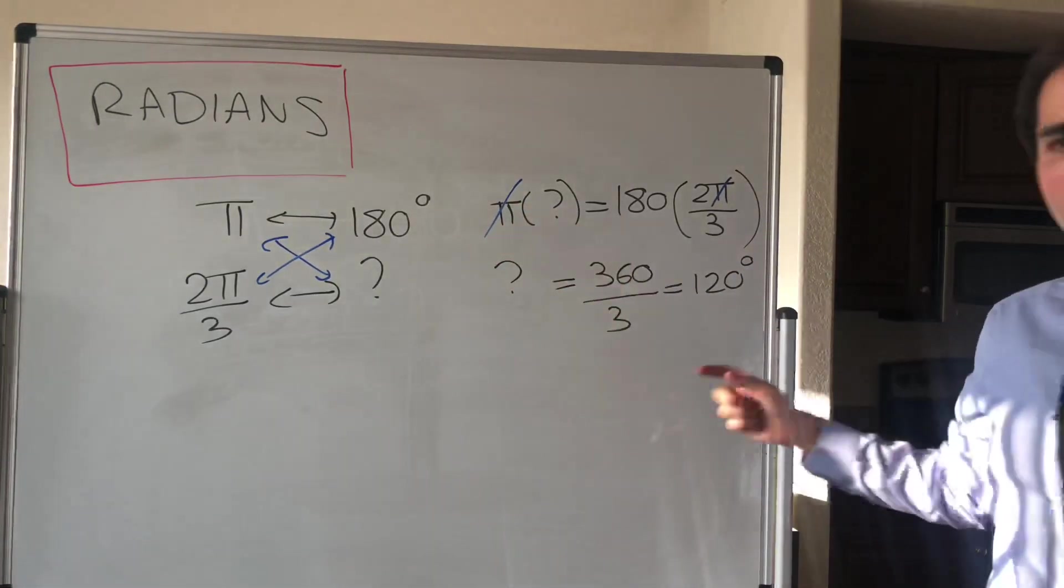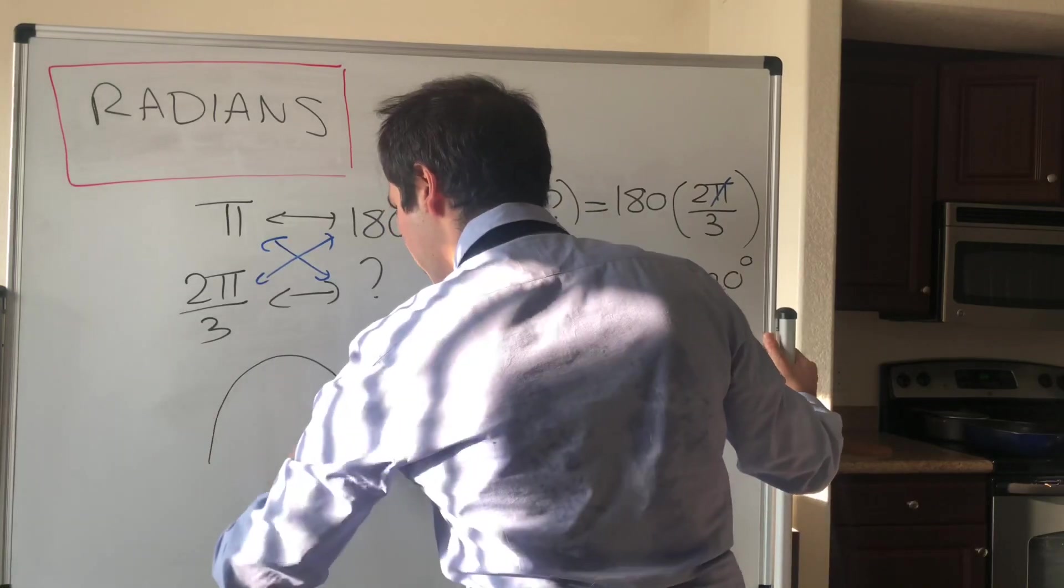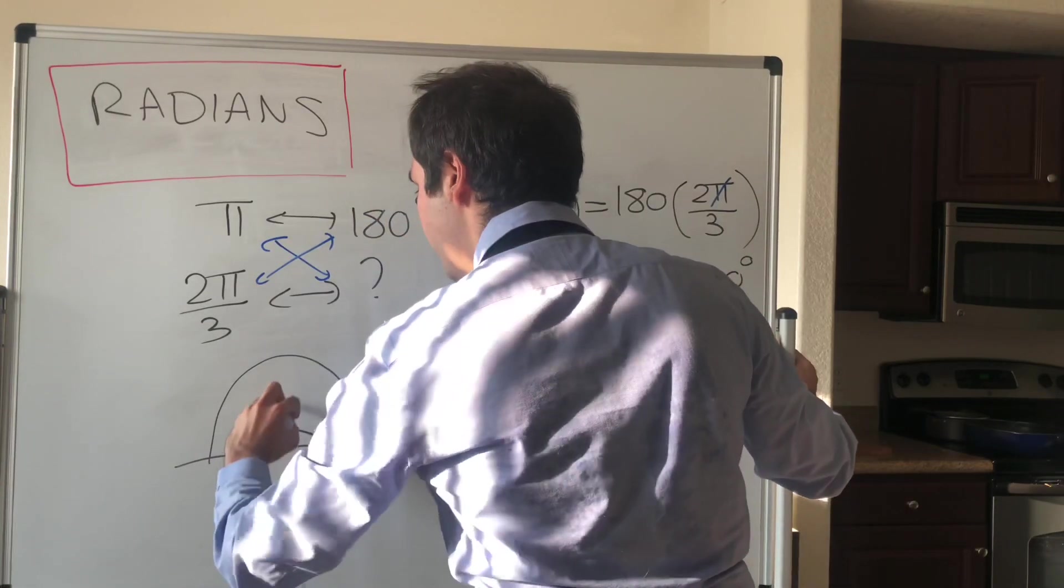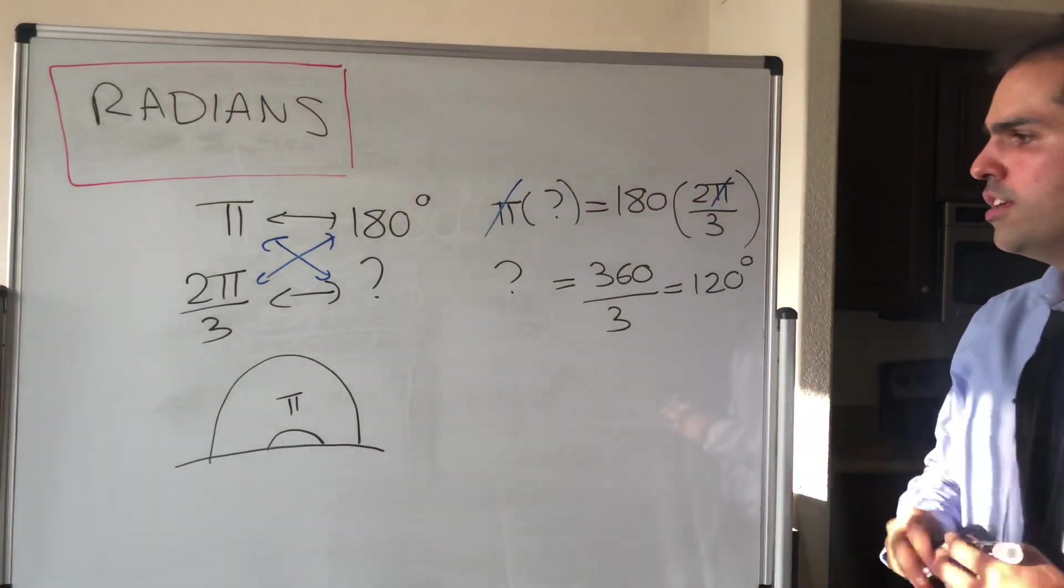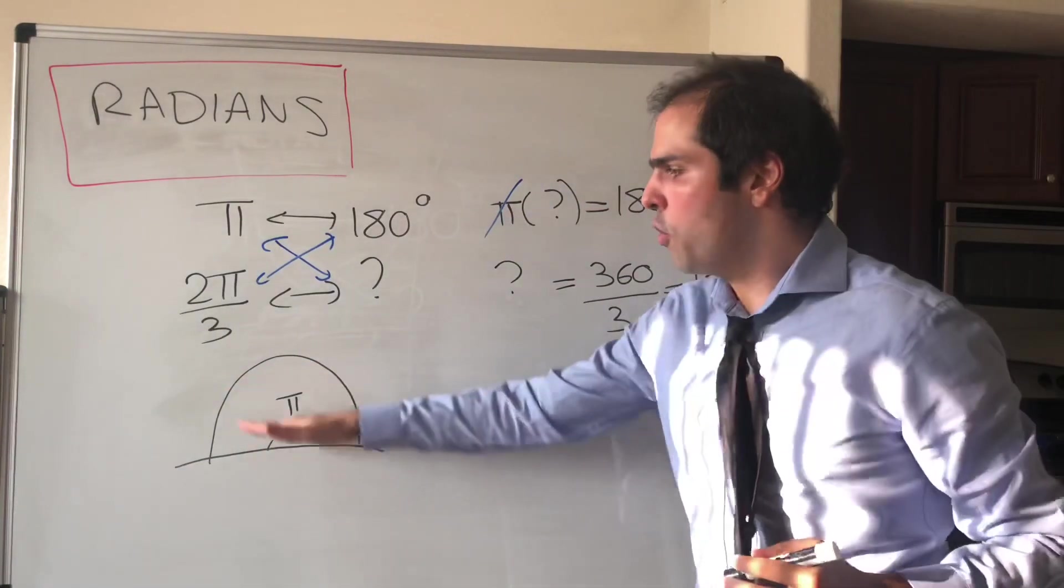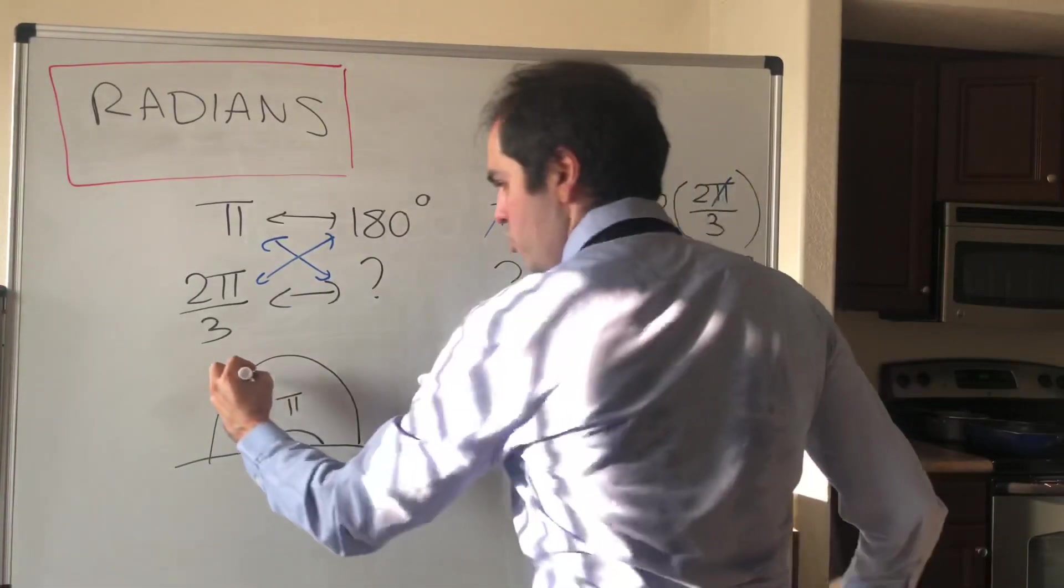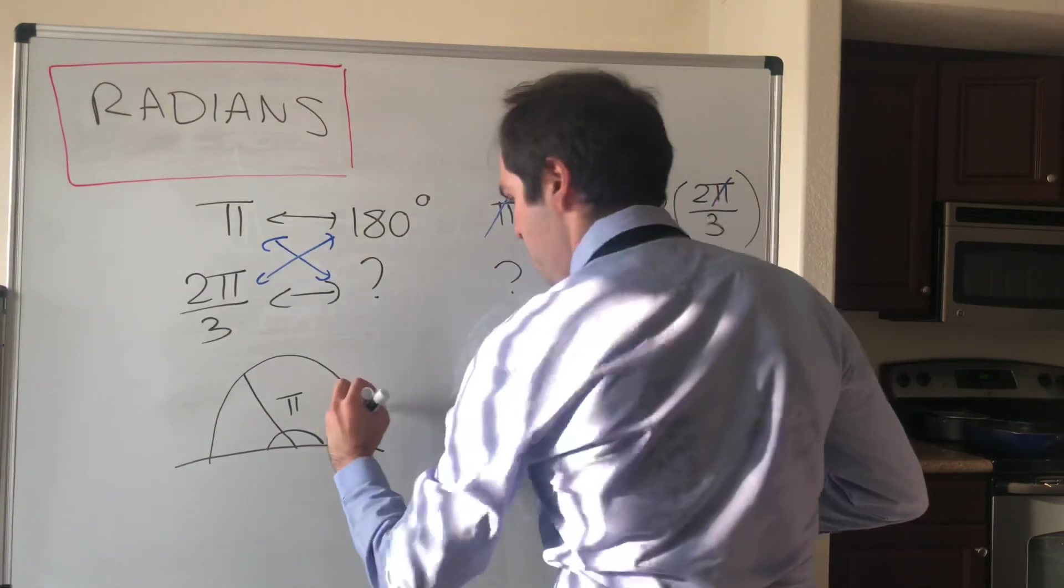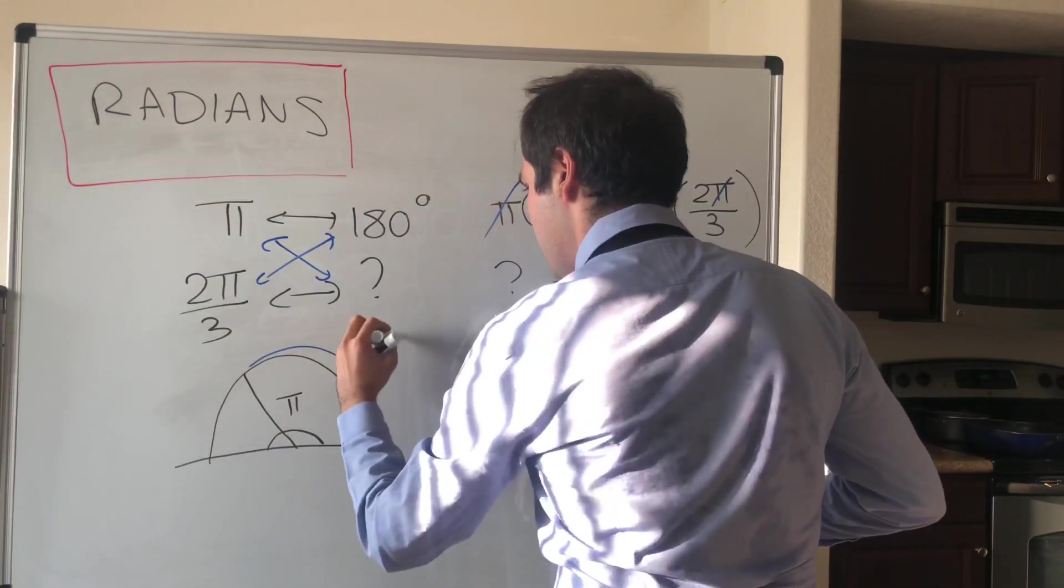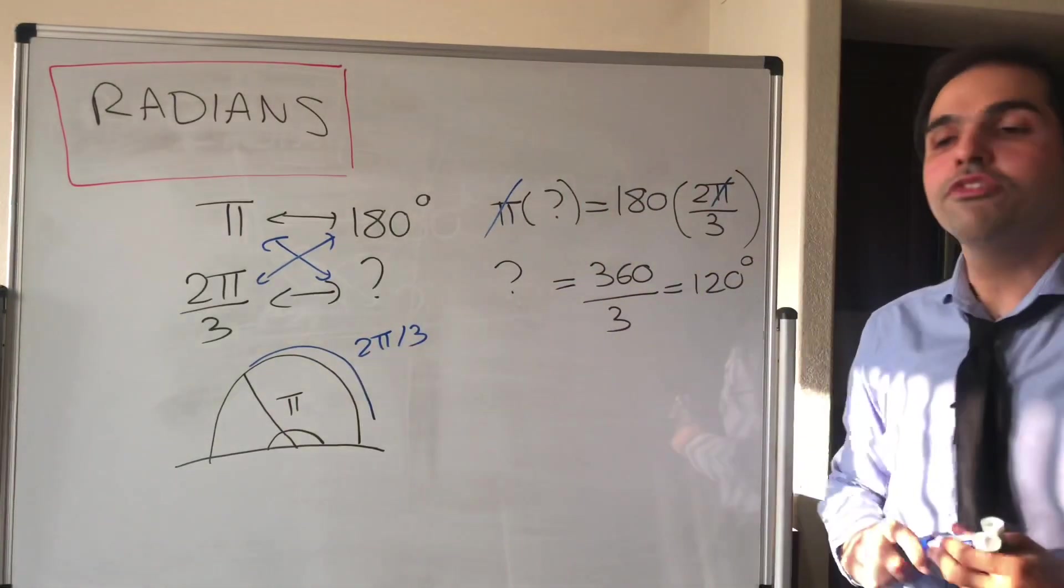And here's another way of thinking about this. π, 180 degrees, corresponds to a semicircle. So 2π/3 corresponds to two-thirds of the semicircle, so maybe somewhere here. So this is 2π/3 and hopefully you're convinced that this is roughly 120 degrees.